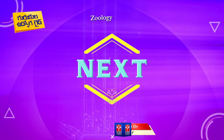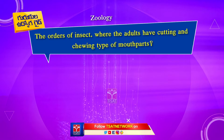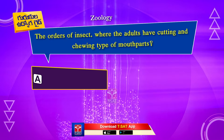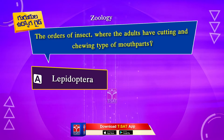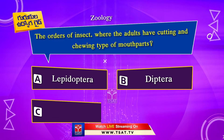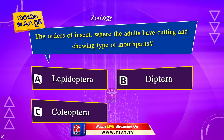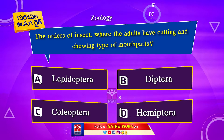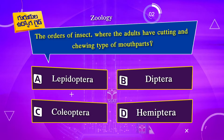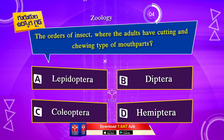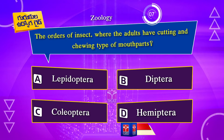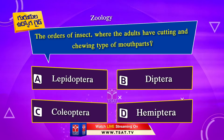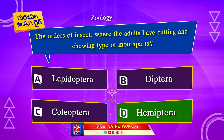Next question. The order of insects where the adults have cutting and chewing type of mouth parts: Option A. Lepidoptera. Option B. Diptera. Option C. Coleoptera. Option D. Hemiptera. The correct answer is Option D. Hemiptera.